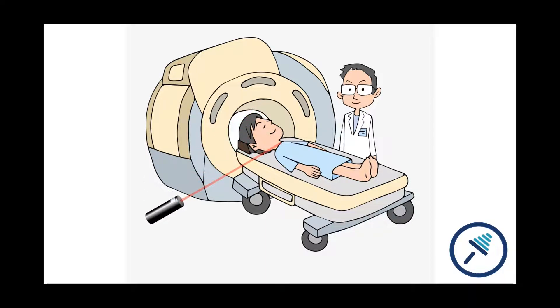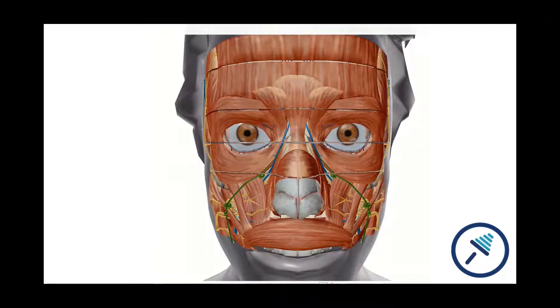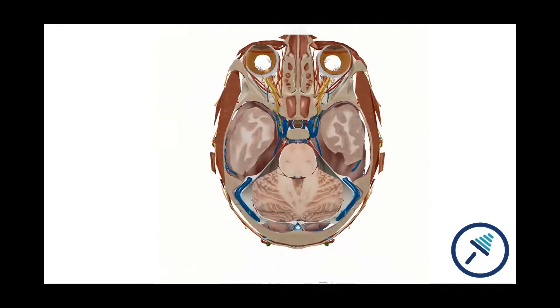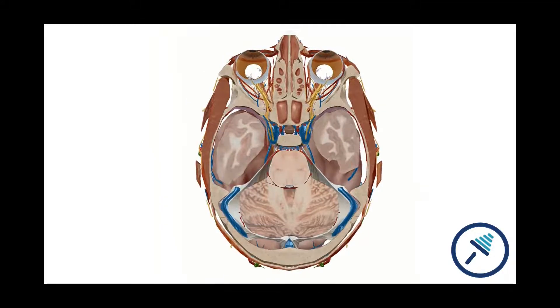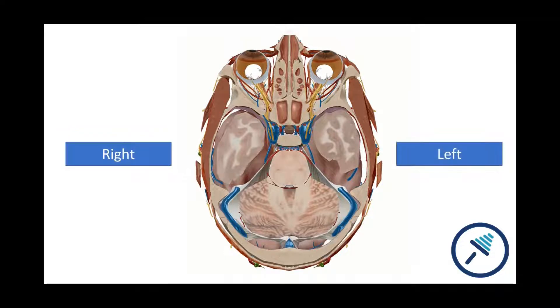And when you see the images of a CT scan, it will be like that. Like this slice that you can see right now. And we can conclude that this is right and this is left.